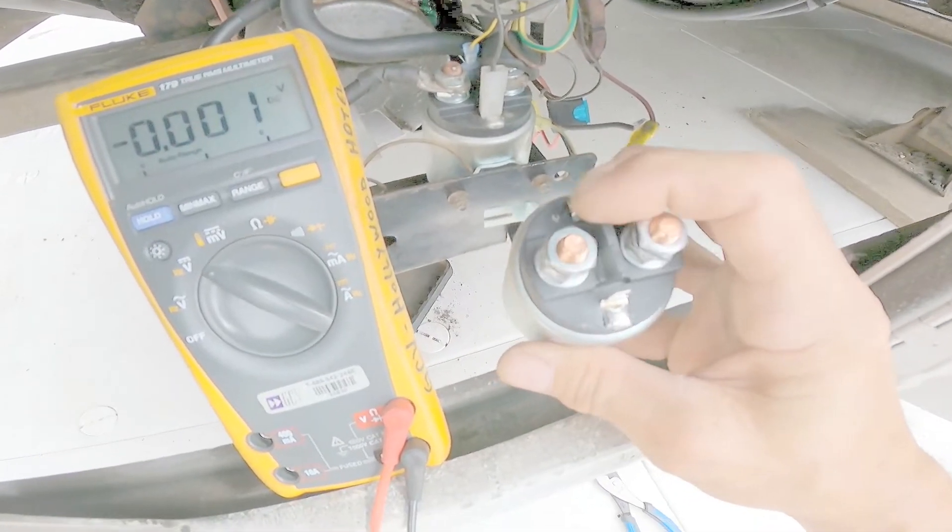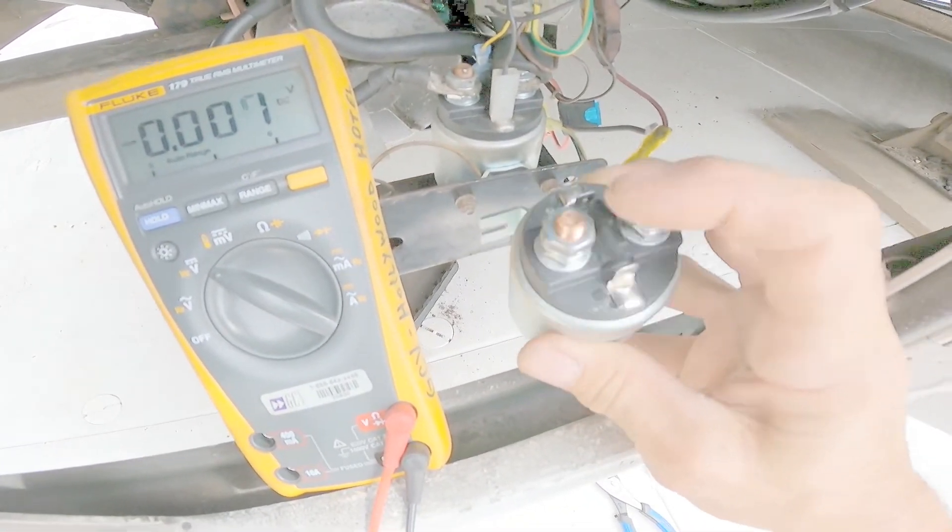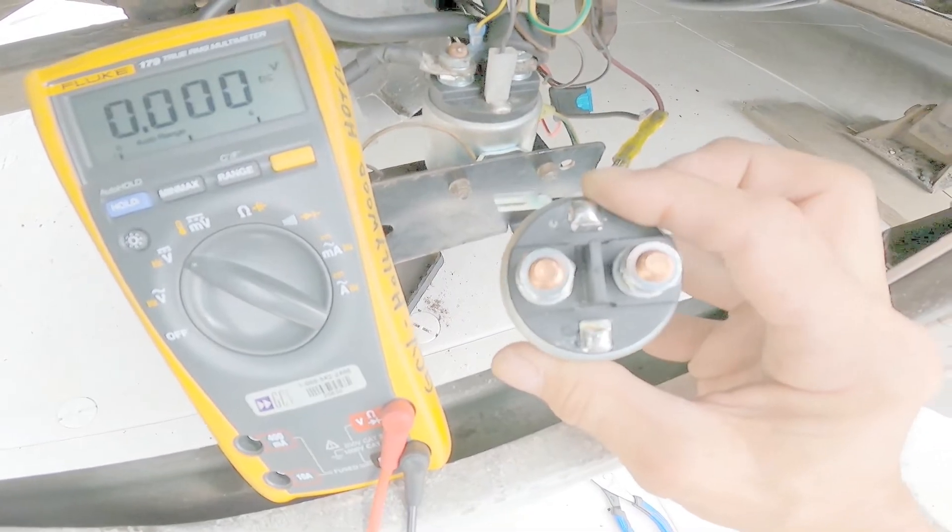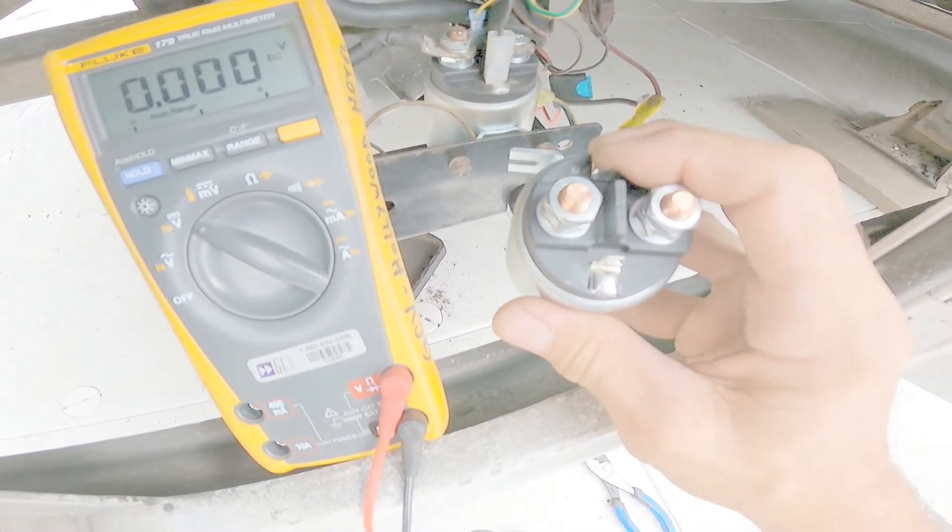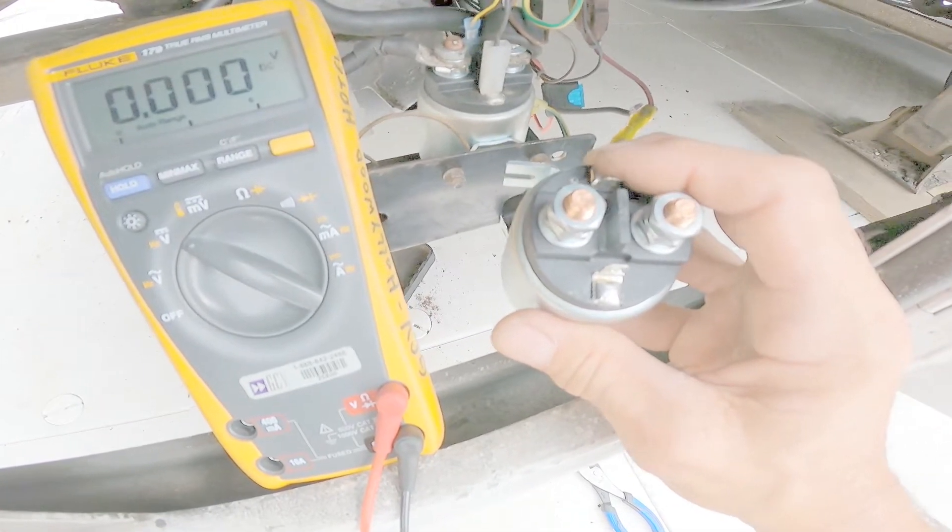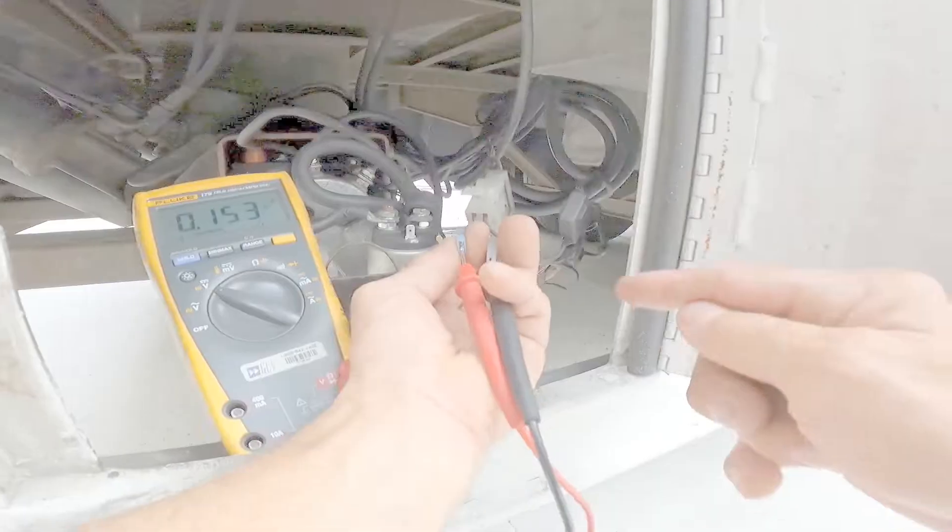The second thing we're going to look for is the voltage on the control inputs. These are these two smaller ones. To do that we're going to pull these two contacts off and meter them, and you won't see the voltage until you turn the switch to engage the hydraulic pump to raise the gate.